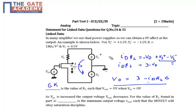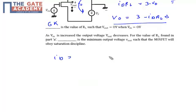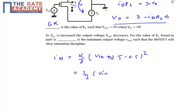The drain current is the current in the saturation region. My drain current will be K/2 times (VGS - VT) squared. Since VIN is not zero this time, it will be (VIN + 1.5 - 0.5) squared times K/2, which equals half times (VIN + 1) squared for K = 1. So my ID = 0.5·(VIN + 1)².